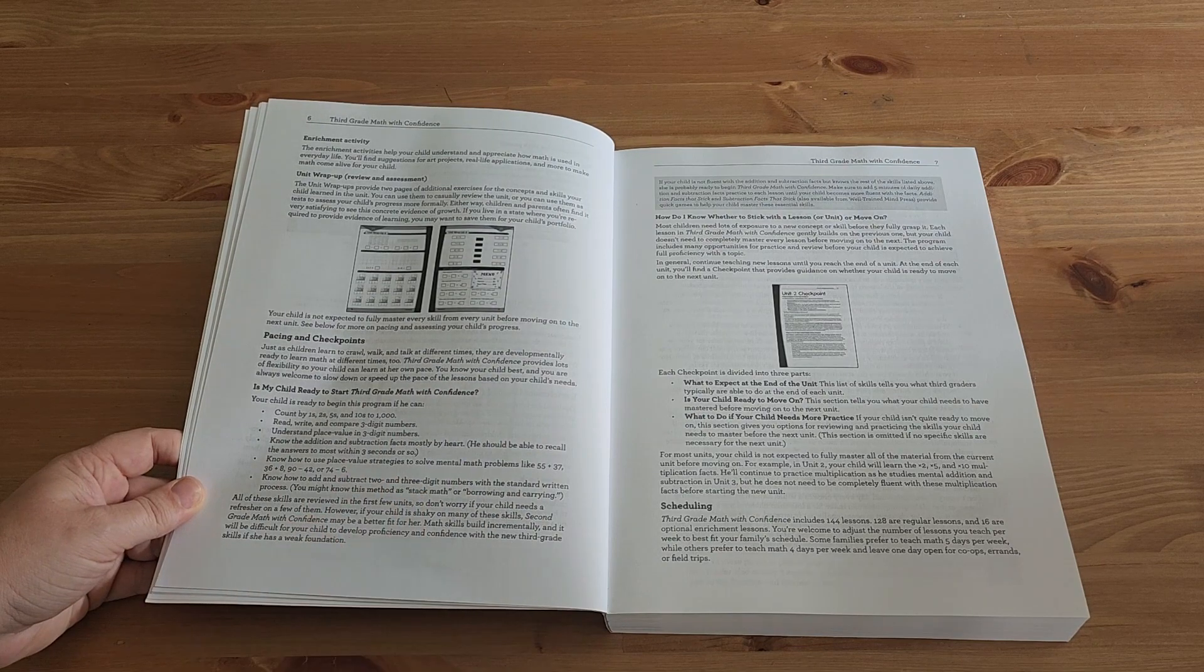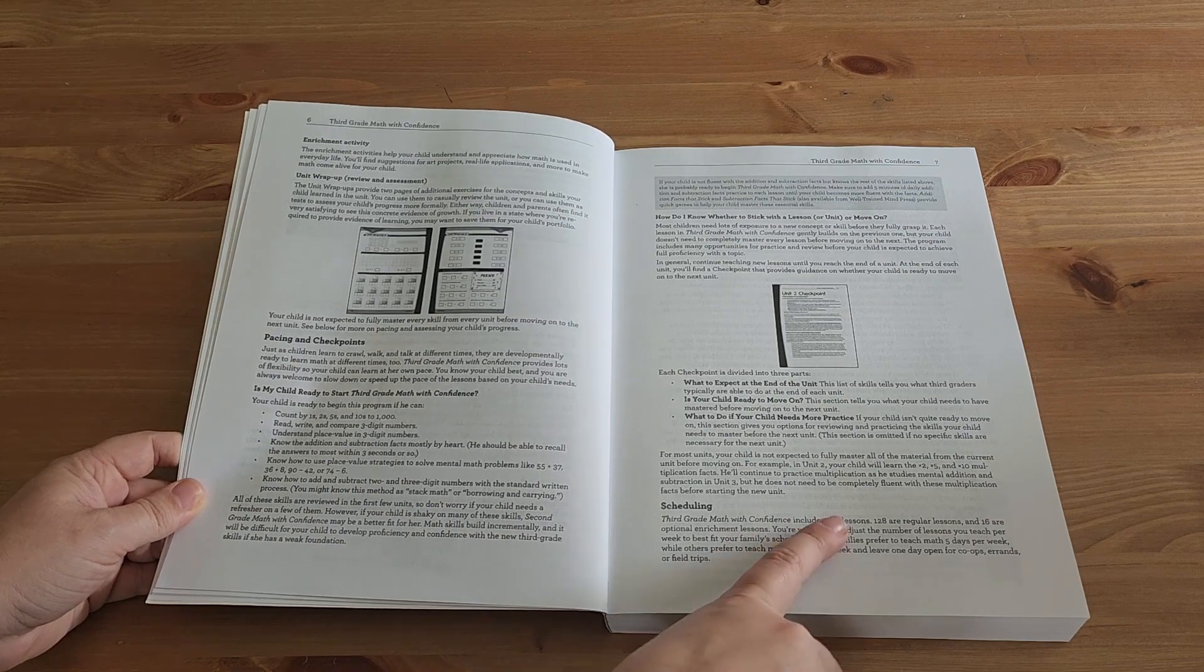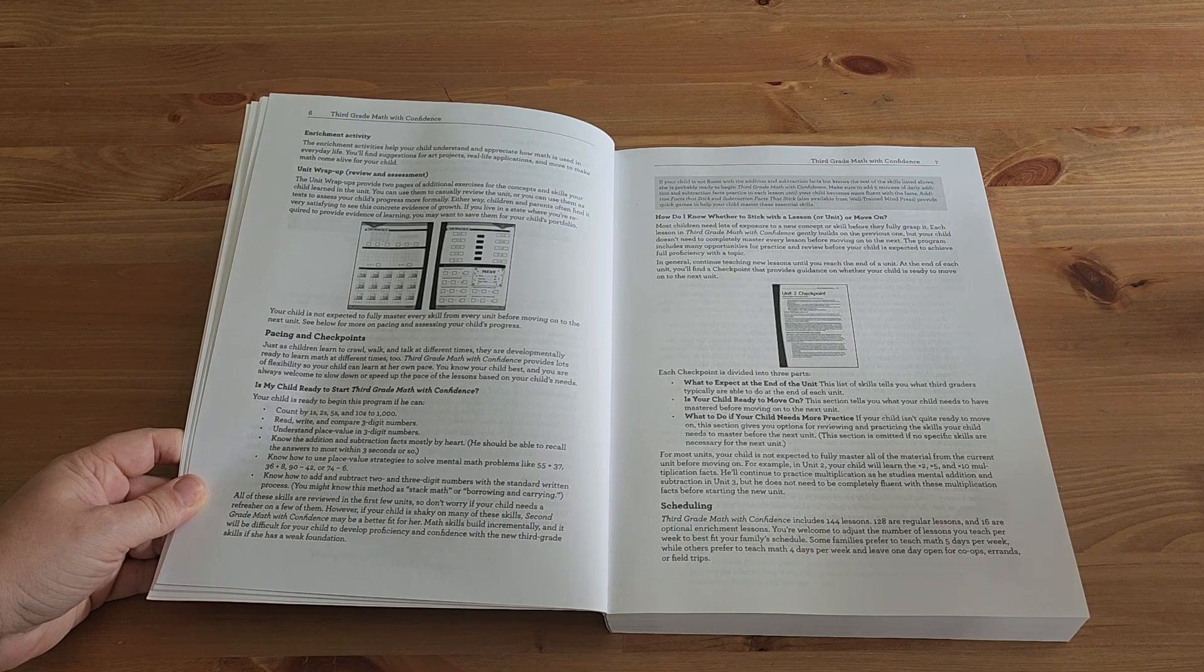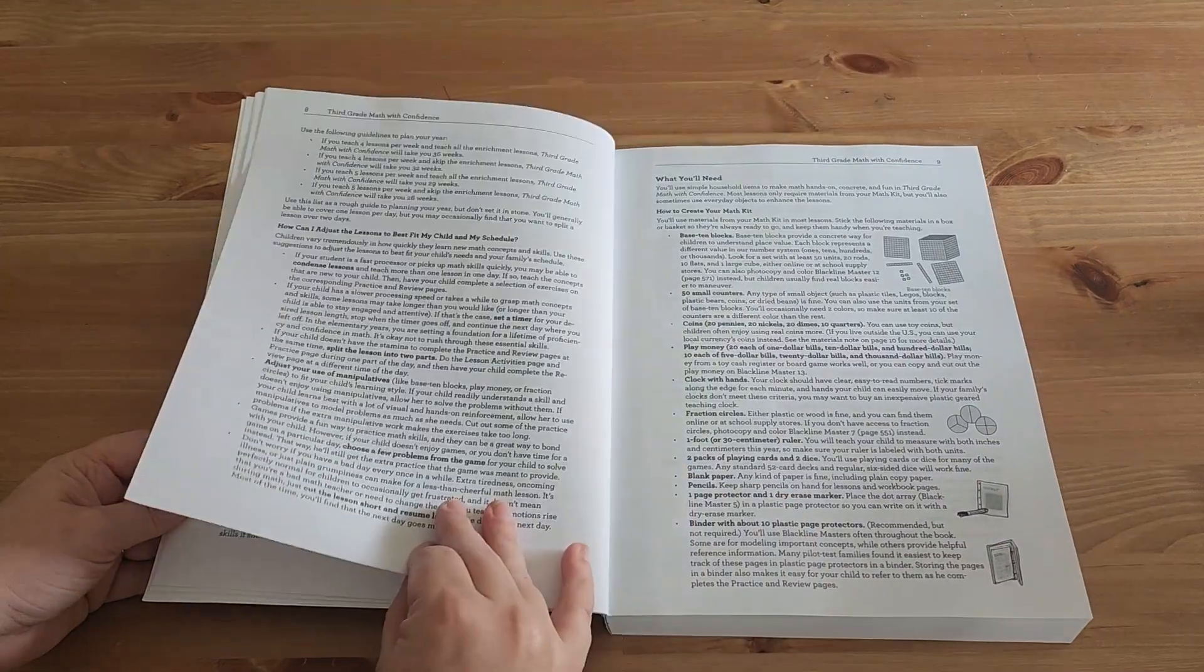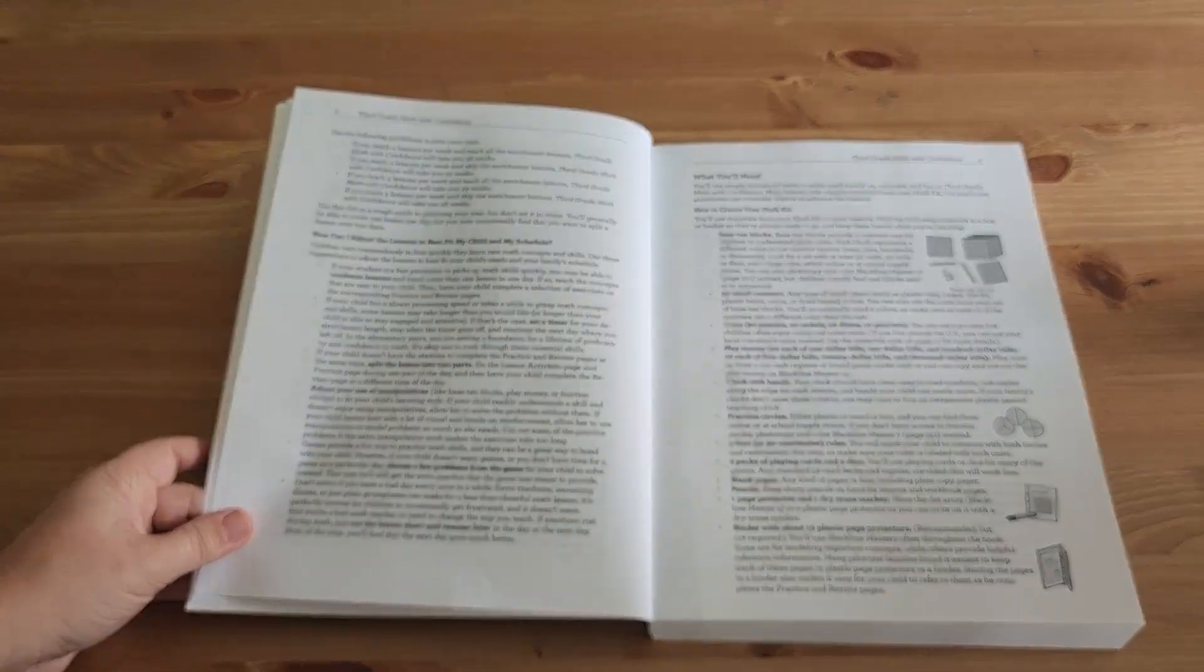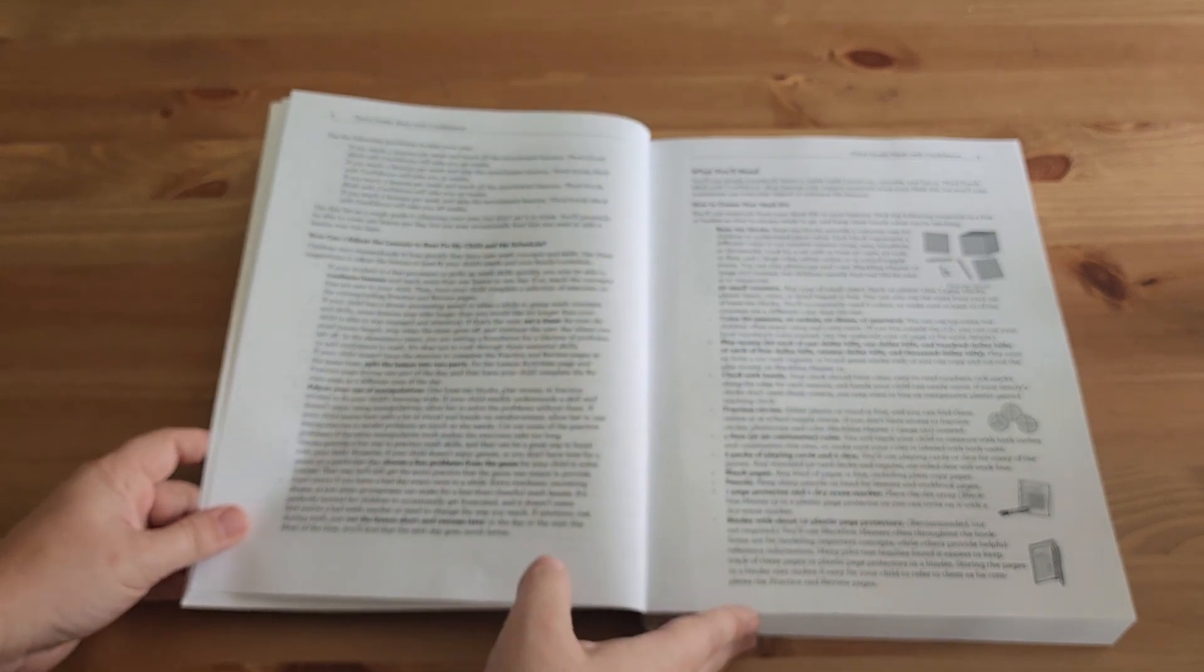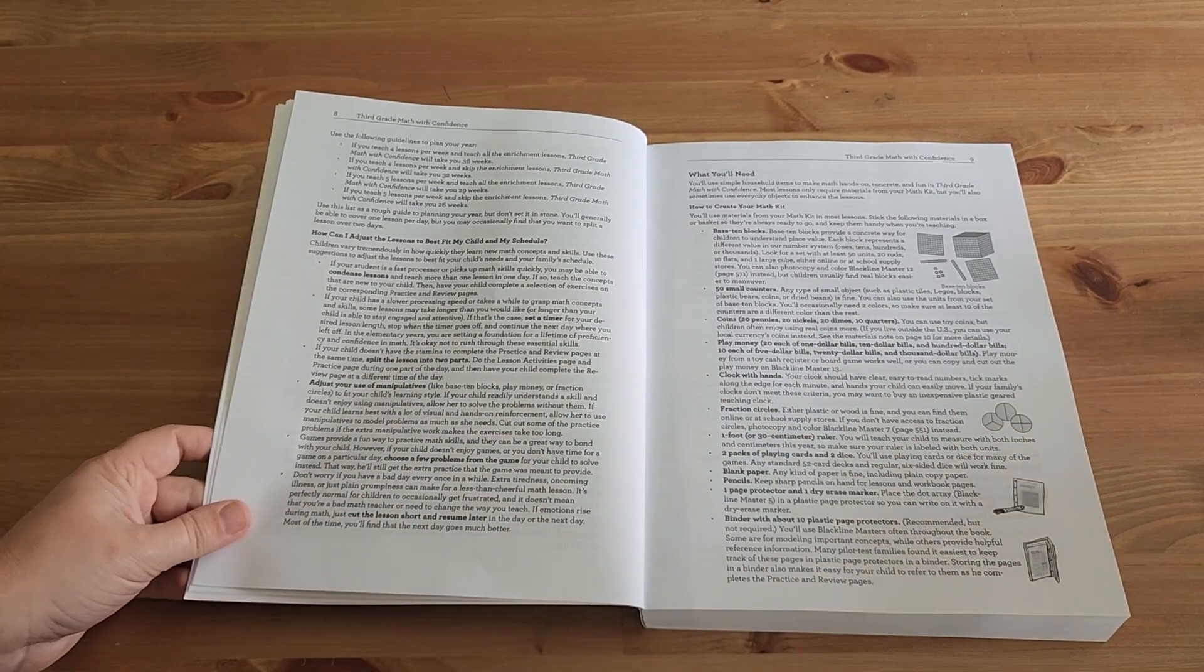It does talk about pacing and checkpoints. For the scheduling, we do math four times a week. So there are 144 lessons. If we do math four times a week, it is going to take us 36 weeks. So that's a little bit of a different setup than what we have done before, but that is fine. We will definitely be able to do that.